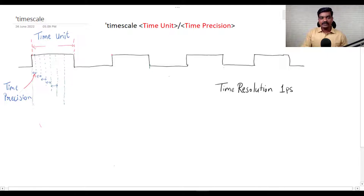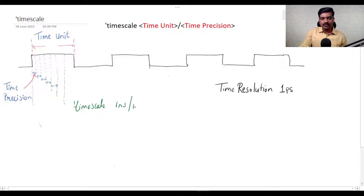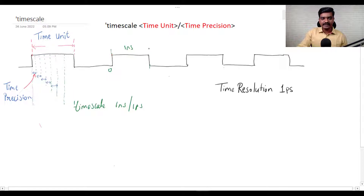Time Precision is how many divisions of time you can have within that time period. The default setting you might have seen is timescale 1 nanosecond by 1 picosecond. This means the signal starting from 0 will have a 1 nanosecond time unit, and each division of that time will be 1 picosecond.